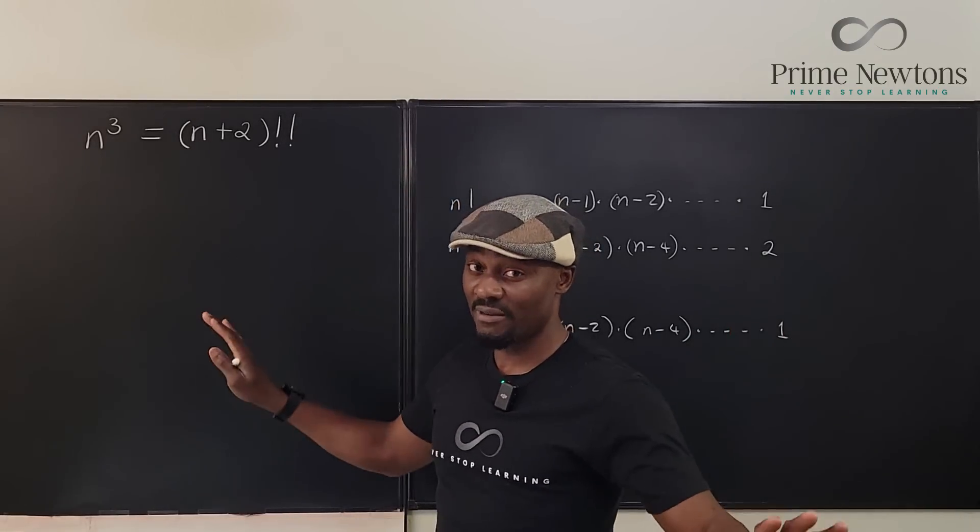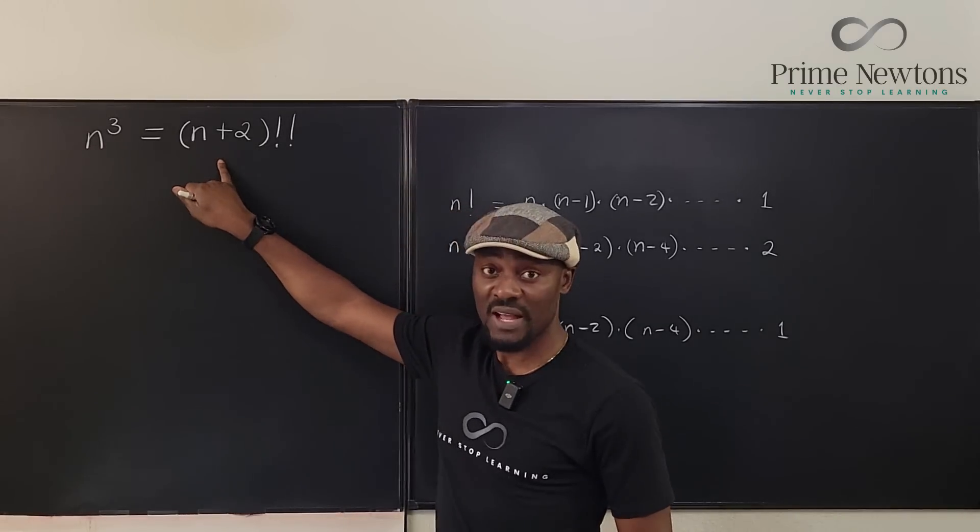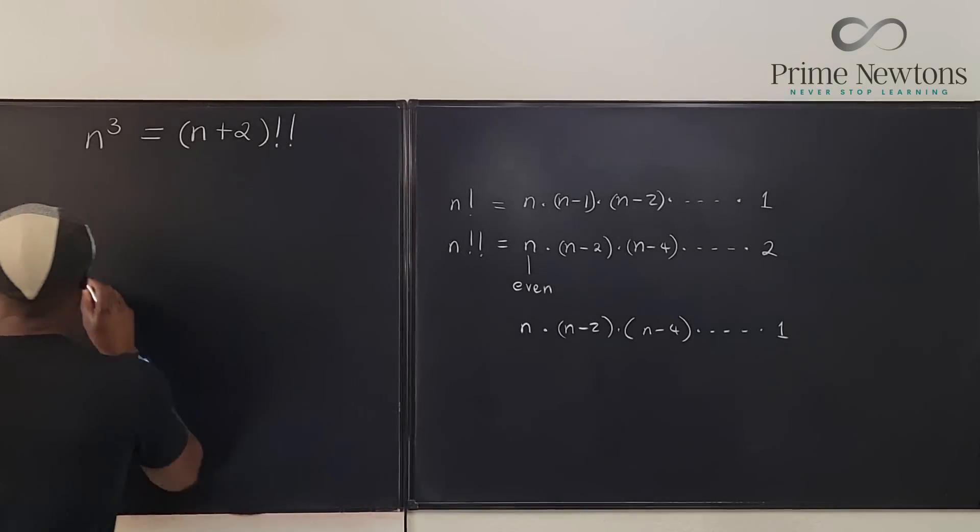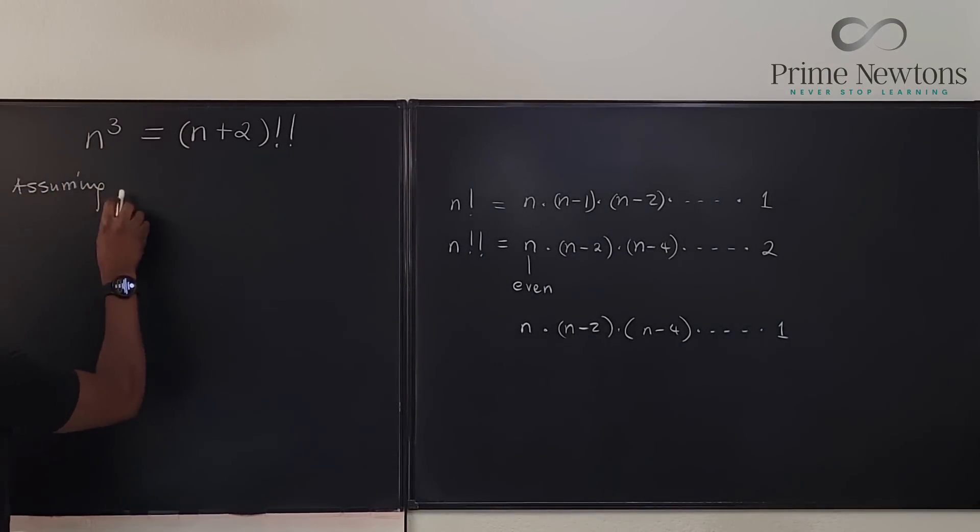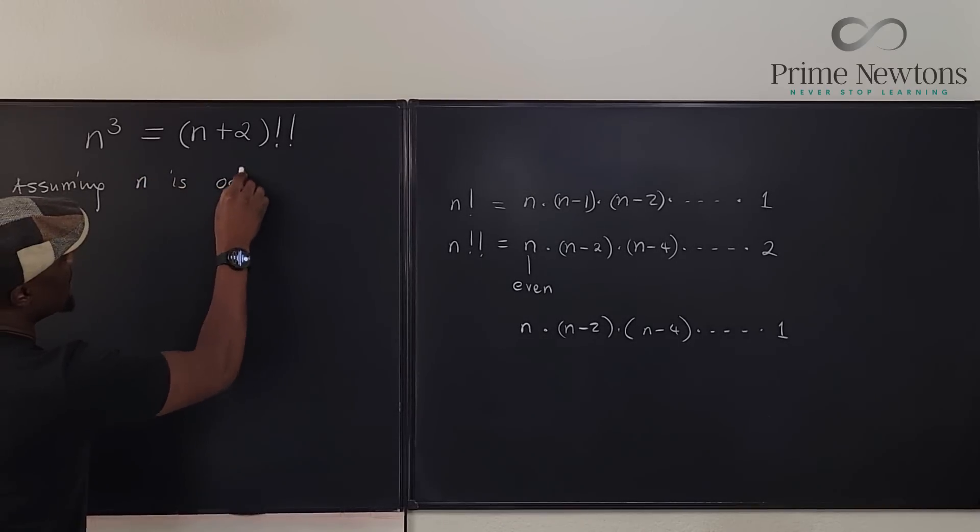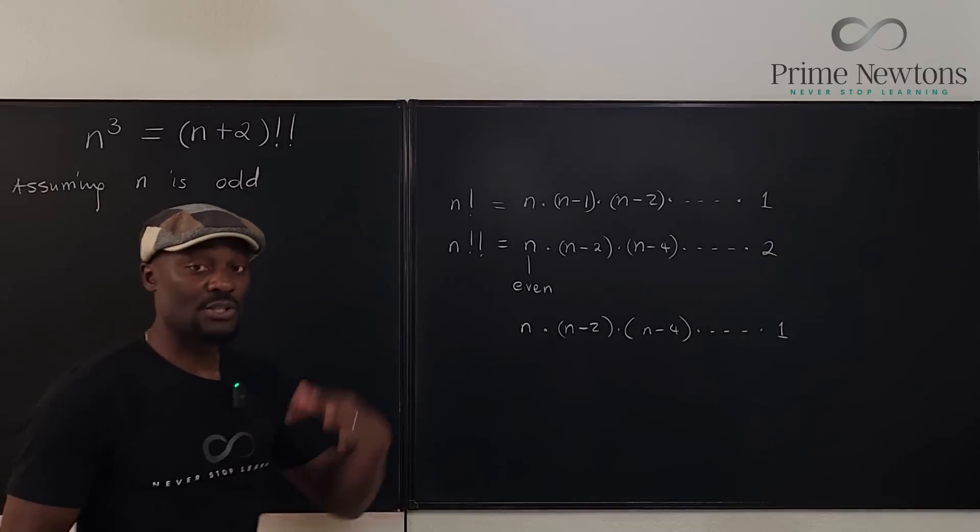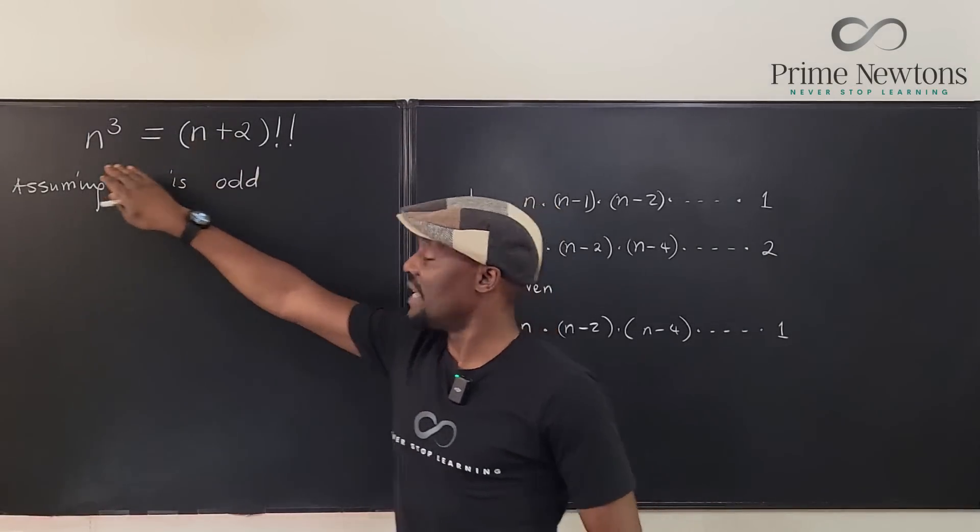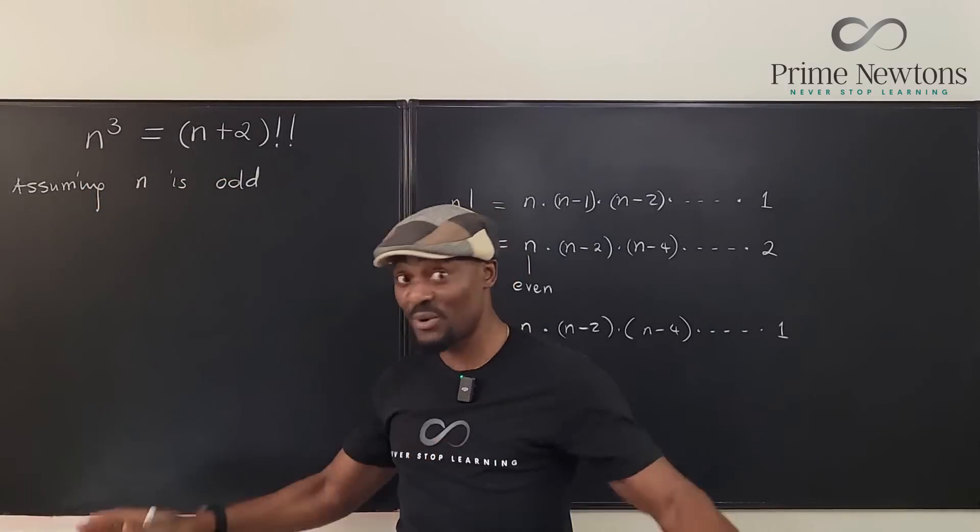So right here, we do not know where this is going to end. But one thing we know is that this is a perfect cube and this is a double factorial. So let's give it a shot. Let's say, assuming n is odd, then it means n cubed is odd, the cube of an odd number is odd, right? So that means if the left hand side is odd, this right hand side must be odd. There is no way out.